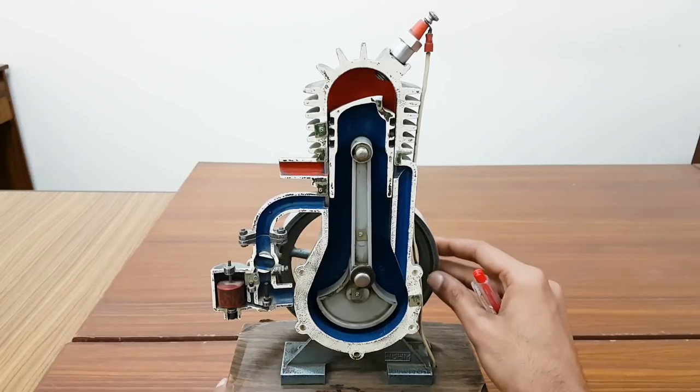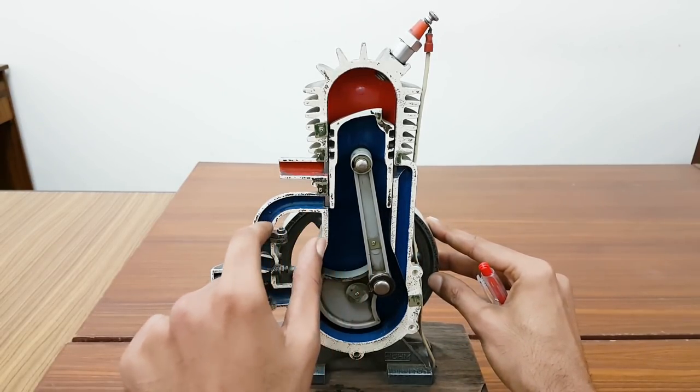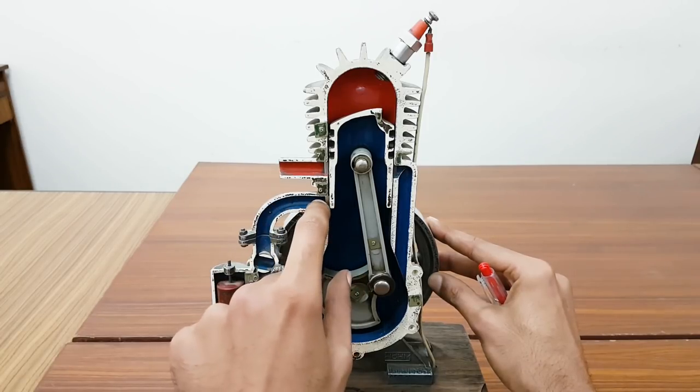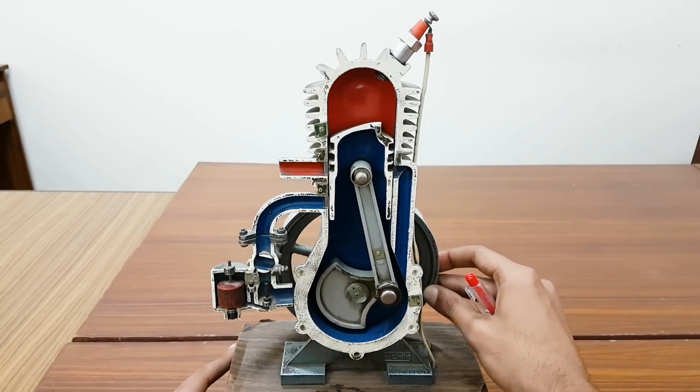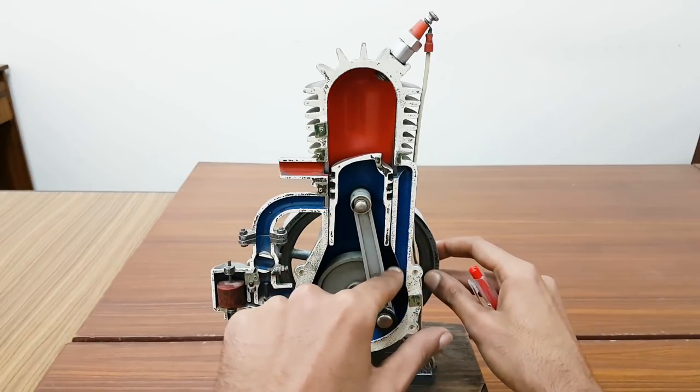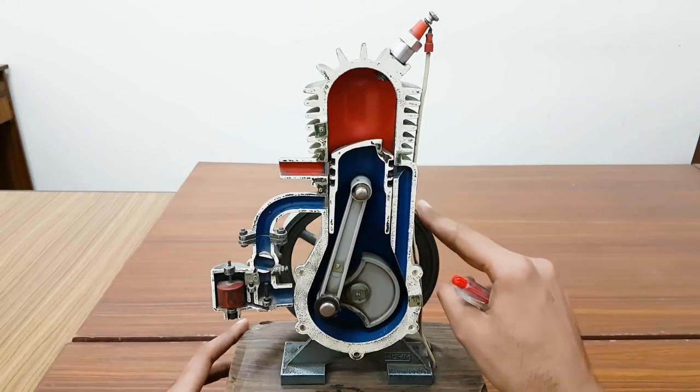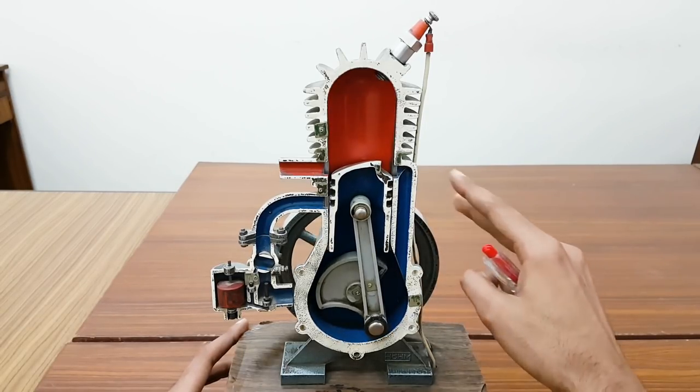As your piston moves down again, it shuts off the carburetor passage or intake manifold passage. When the piston is at this position, your air fuel charge right here will be transferred to the cylinder. This is how your cycle keeps on working and your engine runs.